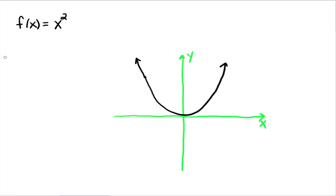So now we all know what the shape of that looks like, so now let's graph g of x equals 3x squared.